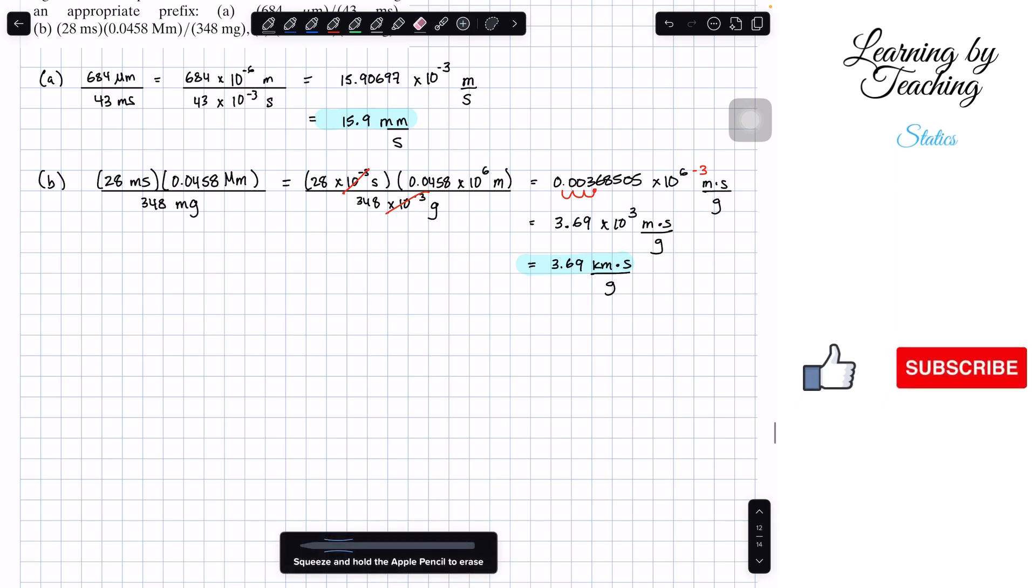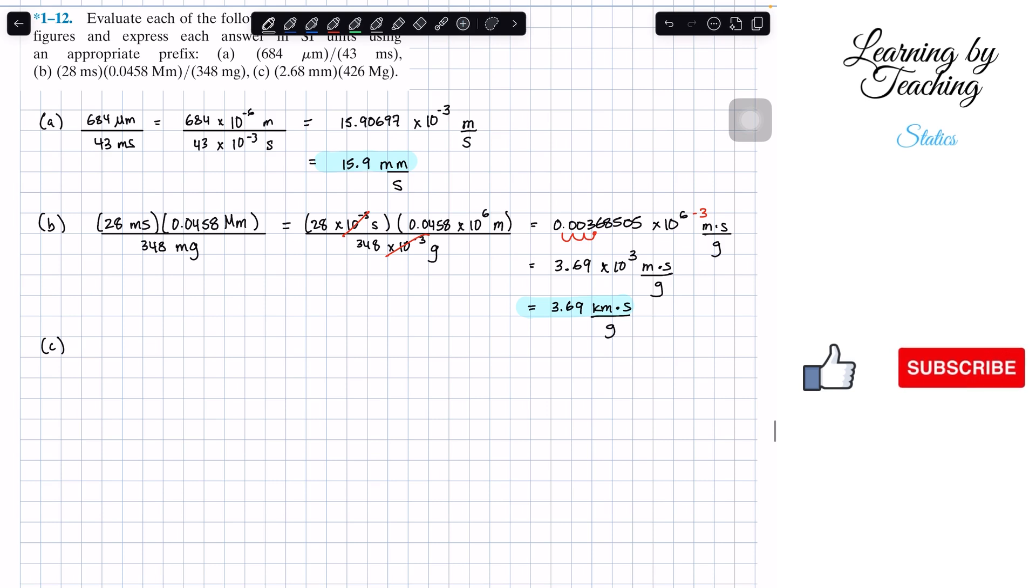Last but not least, we got problem C. We have 2.68 millimeters and we're going to multiply this by 426 megagrams. Just like before, we're going to end up with 2.68 times 10 to the negative 3, multiply it by 426 times 10 to the positive 6 grams. We're going to plug this into our calculator.